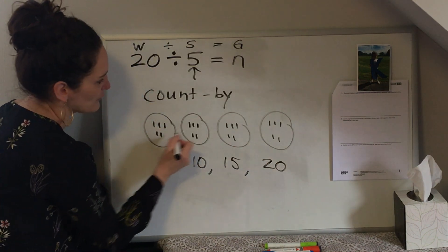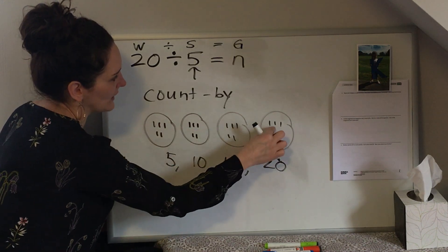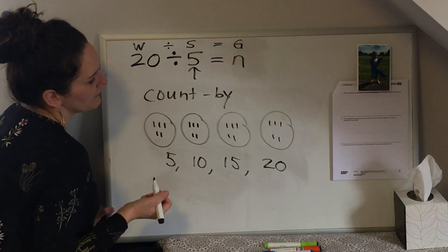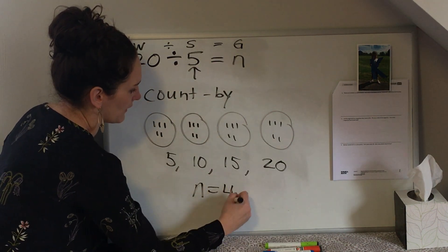See how I counted up by 5 because my size was 5 in each group? 5, 10, 15, 20. And you can see that I drew 4 groups. So 20 divided by 5 equals 4. N equals 4.